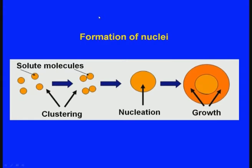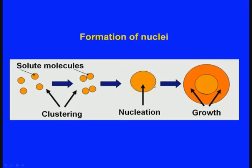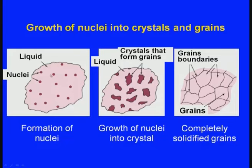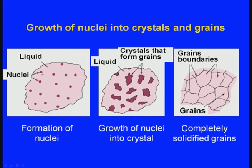How does nucleation take place? Small solute molecules cluster together and a nucleus is formed. This nucleus develops, grows, and finally becomes a crystal. We can see three stages: formation of nuclei, growth of nuclei into crystals, and completely solidified grains. Initially there is liquid everywhere, then nuclei form just below the liquidus line.